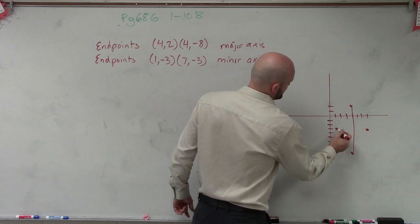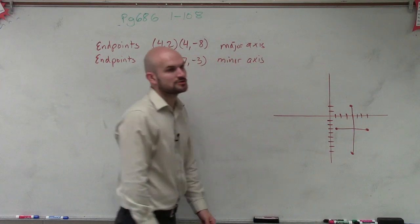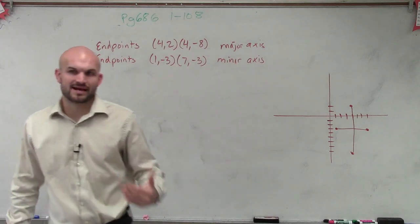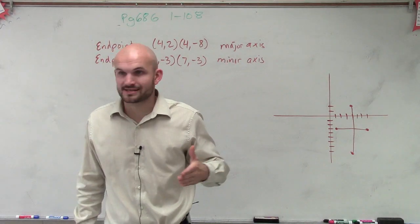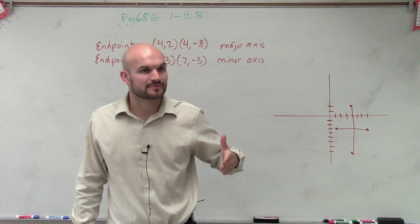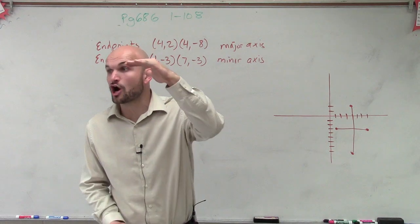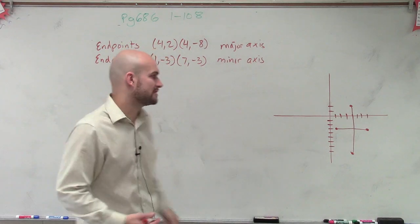So we have a major axis and a minor axis. By our understanding of the major axis and minor axis, since our major axis is vertical, what type of ellipse are we going to have? We're going to have an ellipse that's elongated vertically.